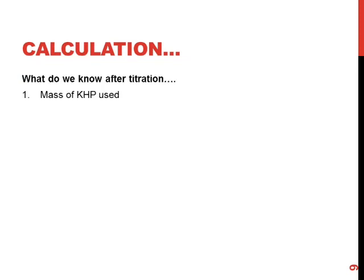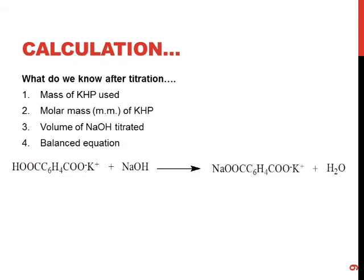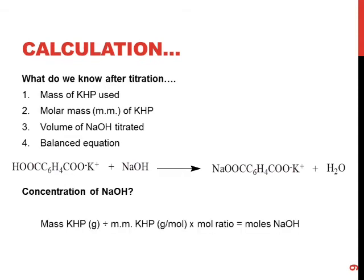Since we know the mass of KHP used, the molar mass of KHP, the volume of sodium hydroxide titrated, and the balanced equation as seen here, we can easily calculate the concentration of sodium hydroxide in our secondary standard. As you can see by the calculation here, you can ultimately arrive at the concentration of sodium hydroxide. When doing your calculations, make sure to include all units so you can see how they cancel out. Please note there is an additional video available should you wish to go over this calculation in detail.